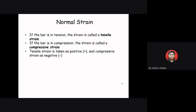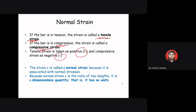Remember: if a bar is in tension, the strain is called tensile strain; if the bar is in compression, the strain is called compressive strain. Tensile strain is taken as positive and compressive strain as negative. The strain epsilon is called normal strain because it is associated with normal stresses. Because normal strain epsilon is the ratio of two lengths, it is a dimensionless quantity — it has no unit.